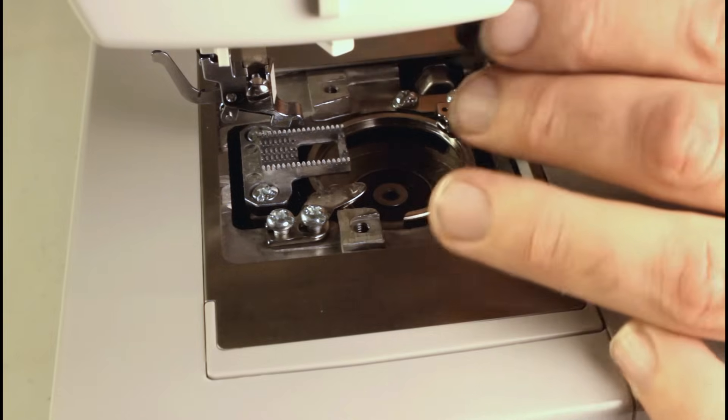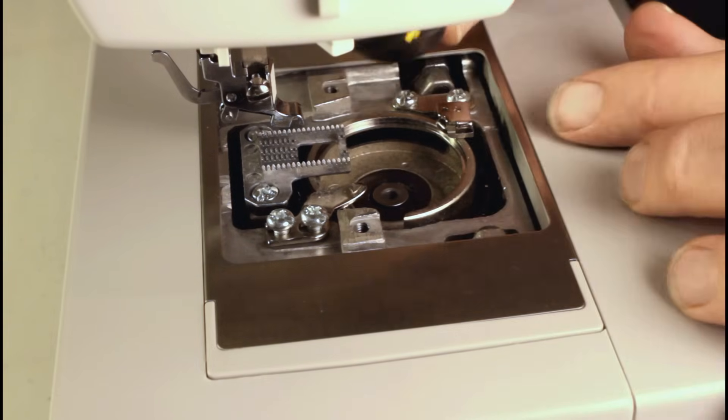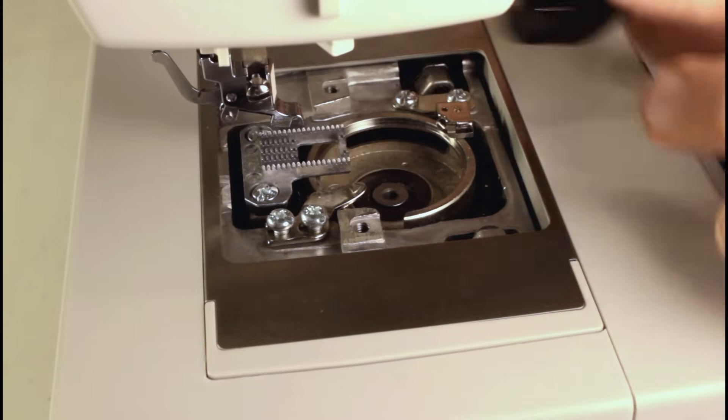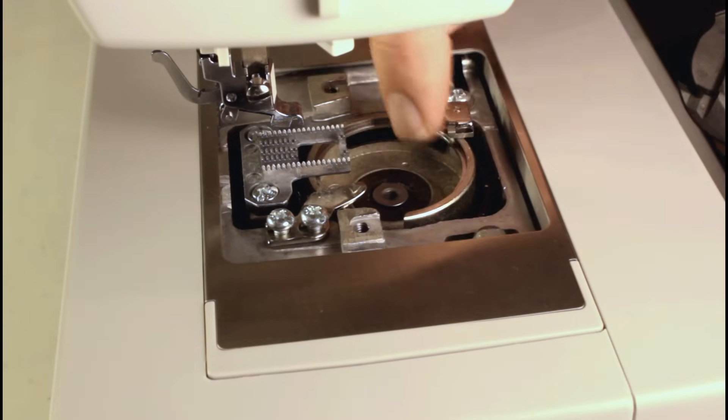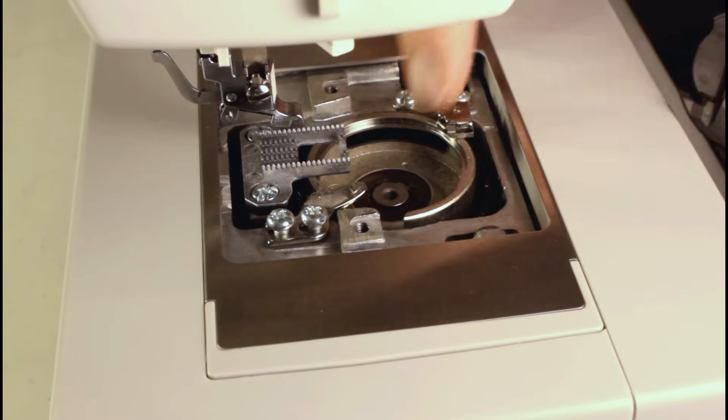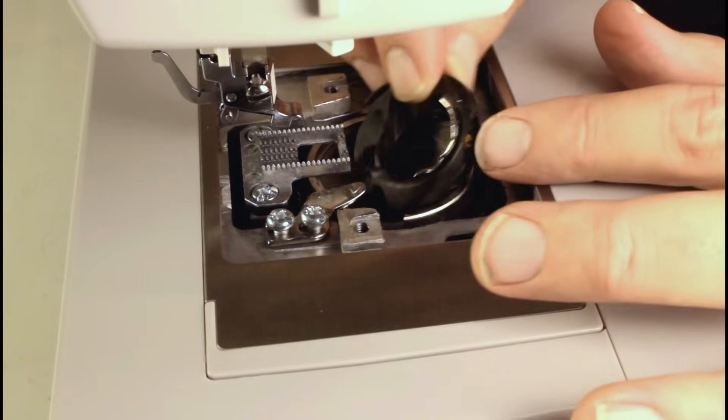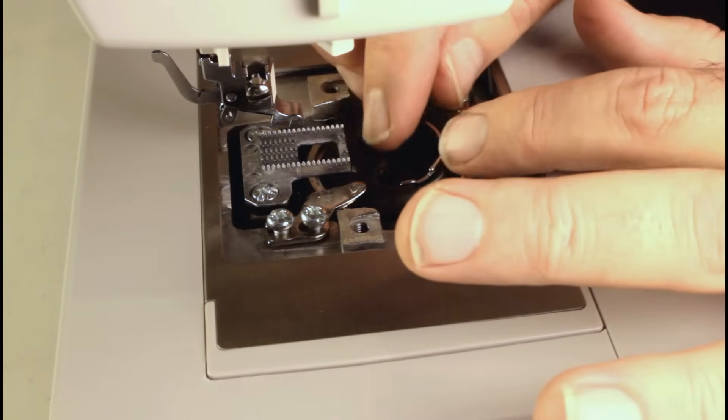We need to put this back in. The yellow screw is going to be toward you. You're going to see a little notch here. And that's going to go against this stop right here. Make sure this stays to the left of that stop when you put your bobbin case in.